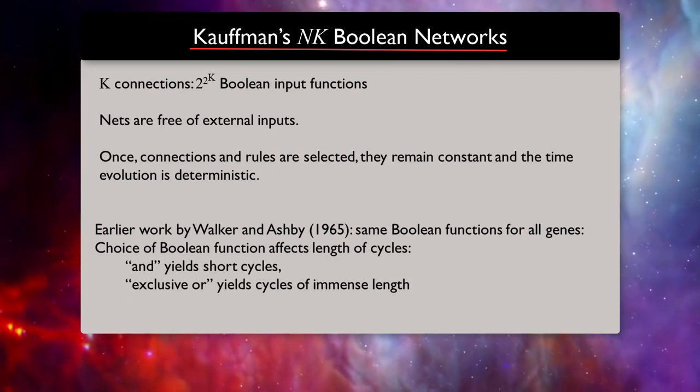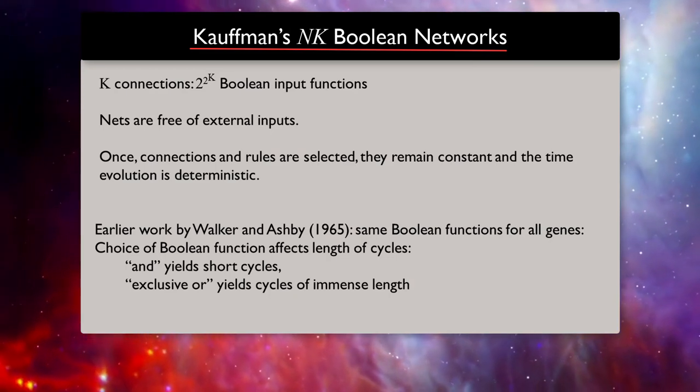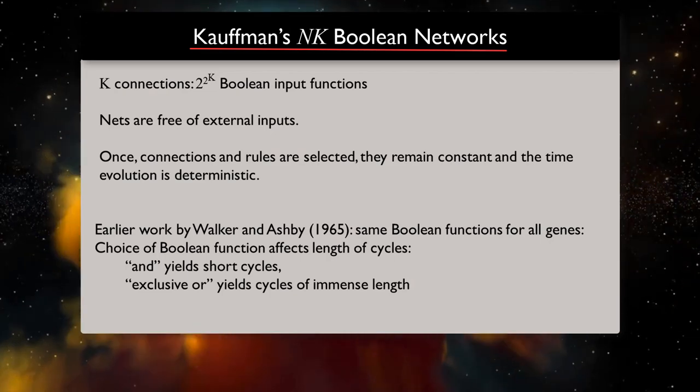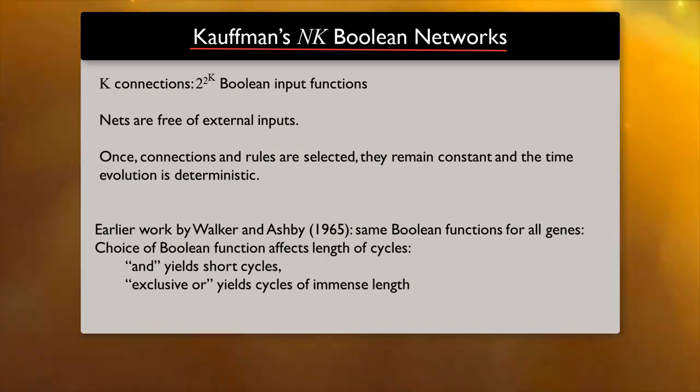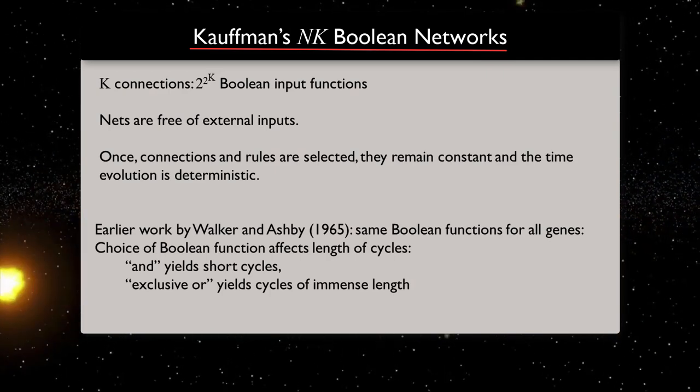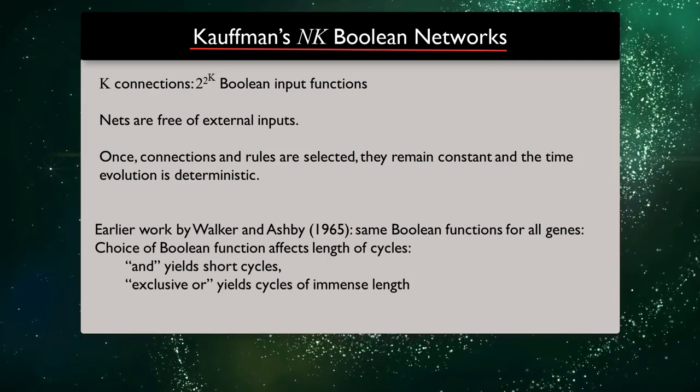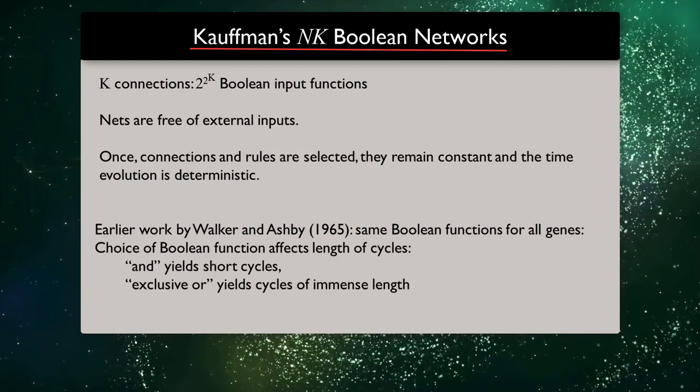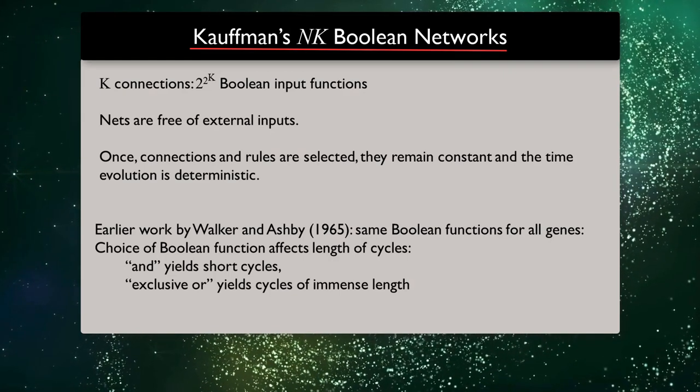Has fortunate evolutionary history selected only nets of highly ordered circuits that alone ensure metabolic stability? Or are stability and epigenetics even in the nets of randomly interconnected regulatory circuits to be expected as the consequence of as-yet-unknown mathematical law?